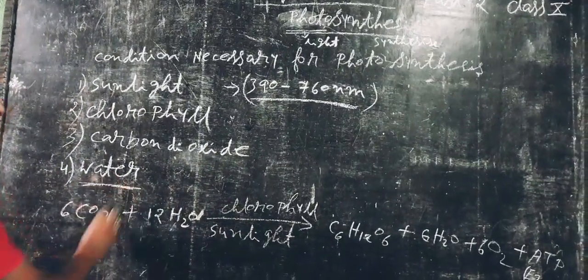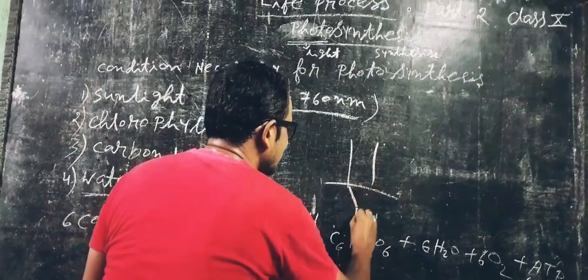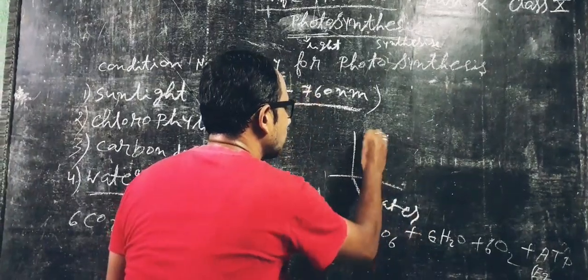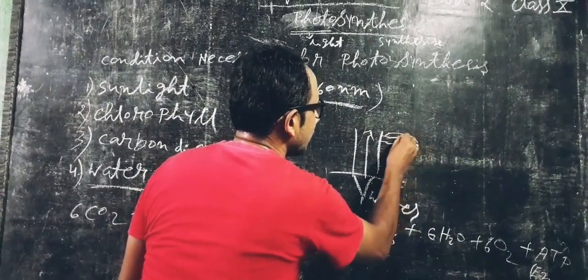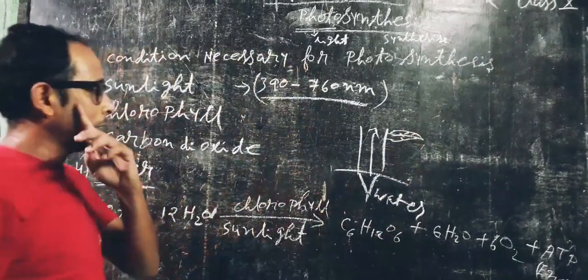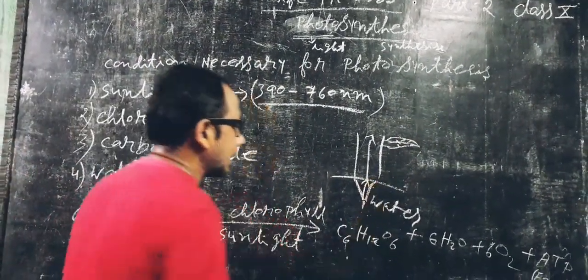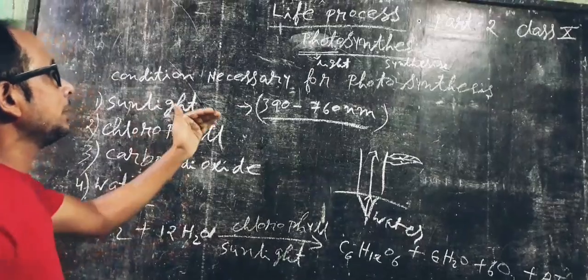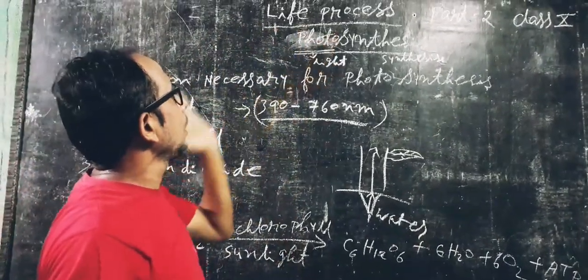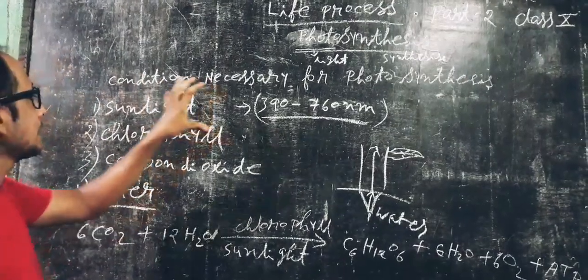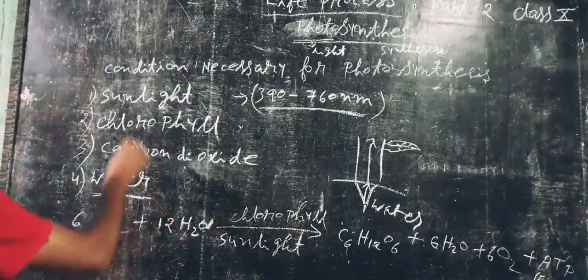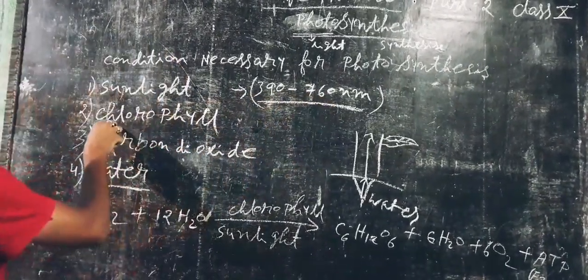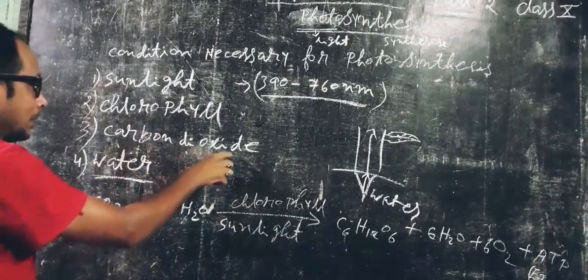The third condition is water. Plants take water through the roots, which is then transported to the leaves through the xylem, and water is also needed for photosynthesis. So the four essential substances needed for photosynthesis are: number one, sunlight in the range of 390 to 760 nanometers; number two, chlorophyll; number three, carbon dioxide; and number four, water.